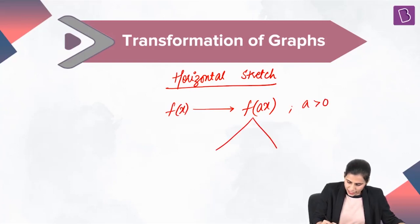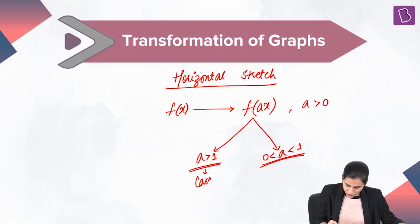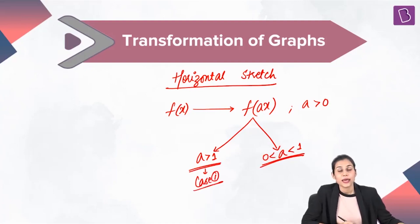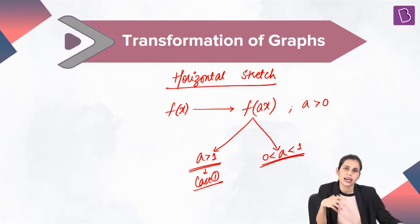Two cases arise. One, when a is greater than one. The other, when a is a fraction strictly between zero and one. Let's begin with case one — how to plot the graph of f(ax) from the graph of f(x), where a is a number strictly greater than one.